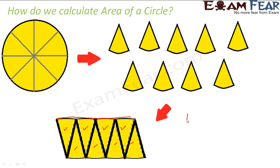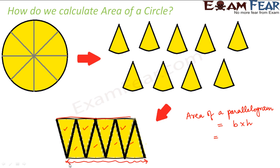We already know the area of a parallelogram is base times height. So what is the base here? This length forms the base of the parallelogram, and that base is formed by four of the eight pieces. Looking back at the circle, these four pieces contribute their curved boundaries — one, two, three, four — to form the base of the parallelogram.